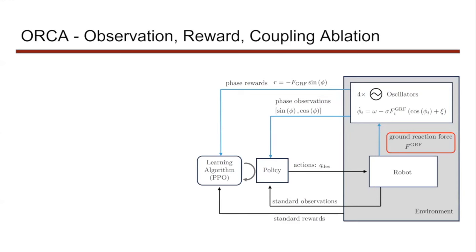Setting sigma to 0 cancels out feedback and reduces the oscillators to clocks that always advance at the nominal frequency, keeping phase differences between legs constant.